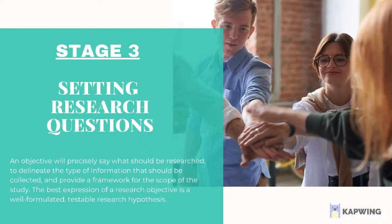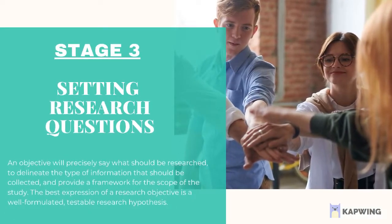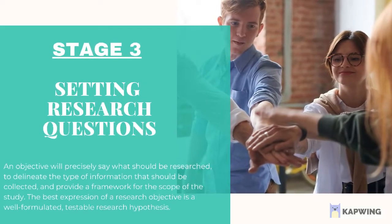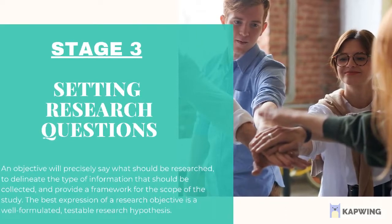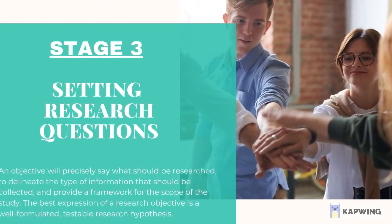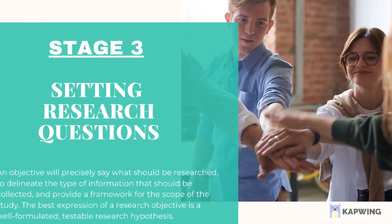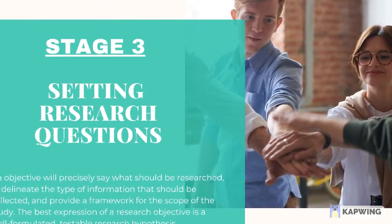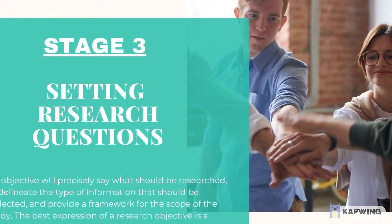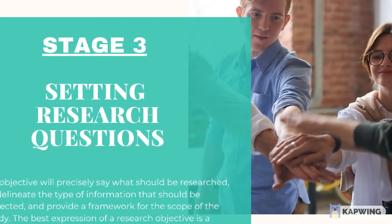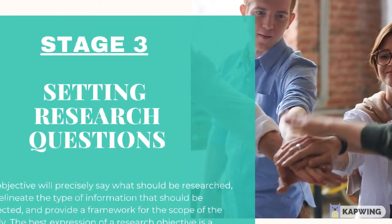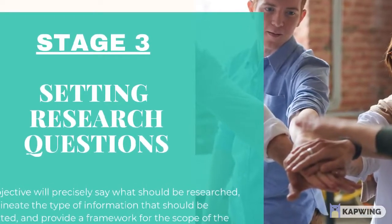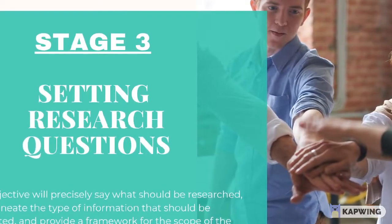Step 3: Setting research questions, objectives, and hypotheses. After discovering and defining the research problem, researchers should make a formal statement of the problem leading to research objectives. An objective will precisely say what should be researched, delineate the type of information that should be collected, and provide a framework for the scope of the study. The best expression of a research objective is a well-formulated, testable research hypothesis. A hypothesis is an unproven statement or proposition that can be refuted or supported by empirical data. Hypothetical statements assert a possible answer to a research question.